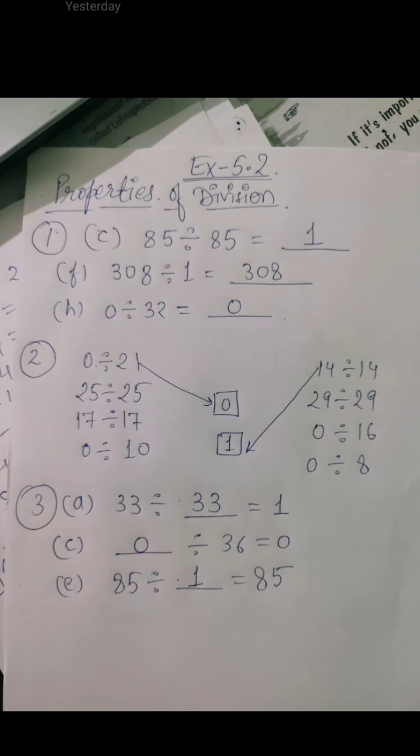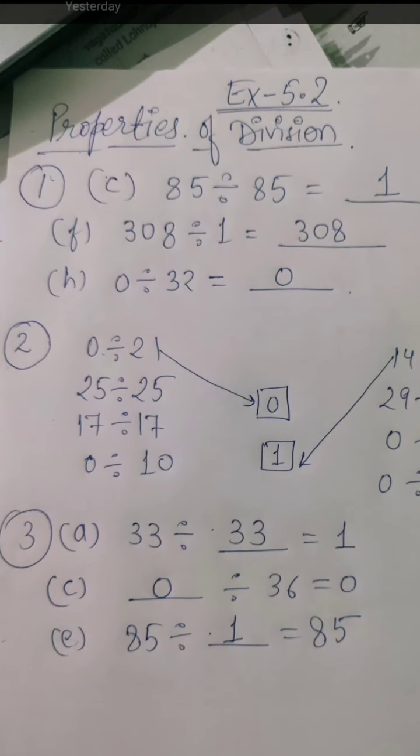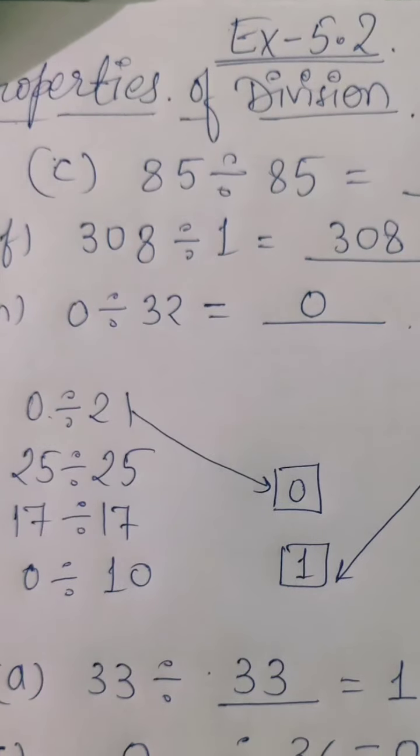Next thing. Now, if 0 is divided by 32. We have to divide 0 by a number. When we divide 0 by a number, we always get 0 only. We get only 0. So, it means, if I divide it by 32, I will get only 0.